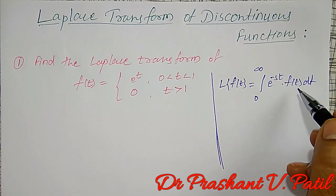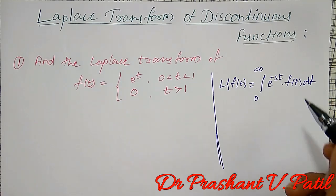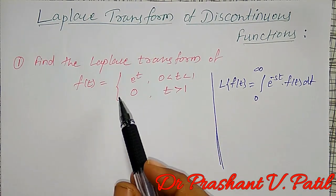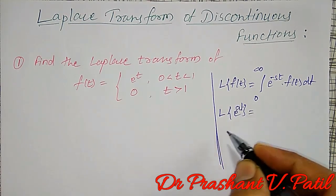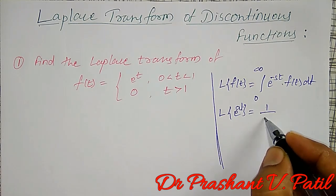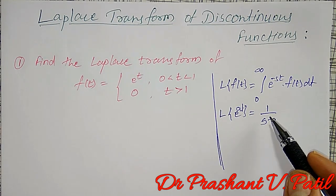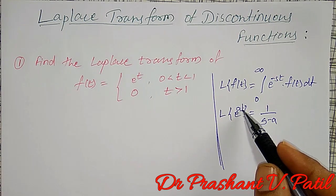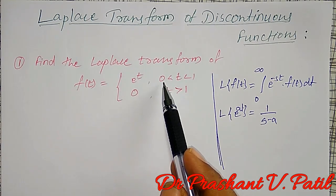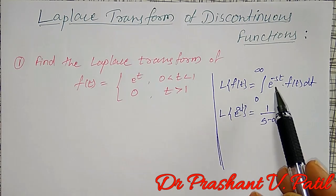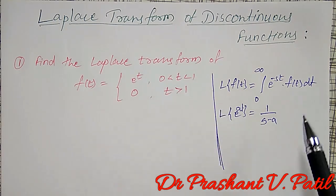In this definition, t is defined between 0 to infinity continuously. One thing to observe: f(t) = e^t, and we know that the Laplace Transform of e^(at) is 1/(s − a). This standard formula applies when t is defined between 0 to infinity, but here f(t) = e^t is defined only for 0 to 1. That's why we must use the definition of Laplace Transform and split the integration using this discontinuity.